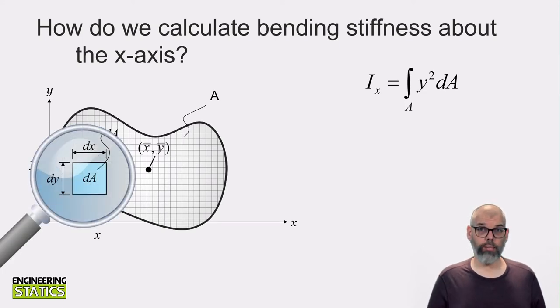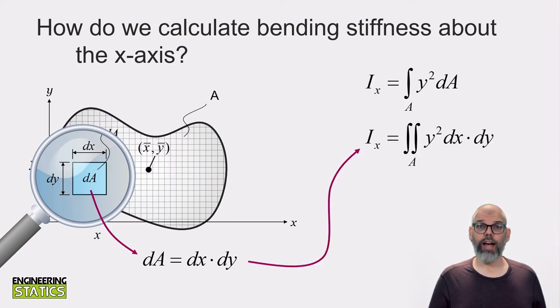If we zoom into our element, we see that the area element has an infinitesimal width of dx and infinitesimal height of dy. The area of the element is thus simply width times height, or dx times dy. This means that our integration is in fact a double integral. We have to consider the summation of all columns and rows of differential elements.